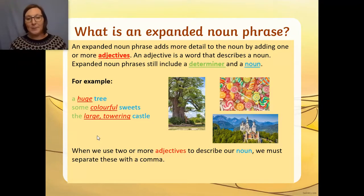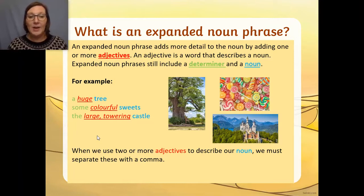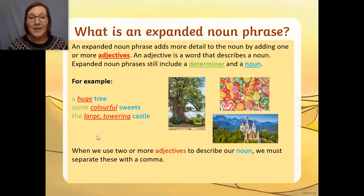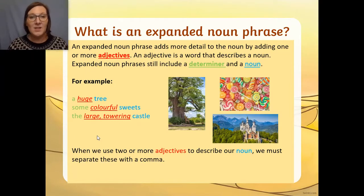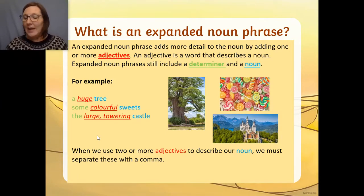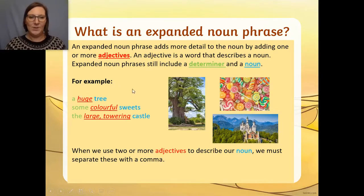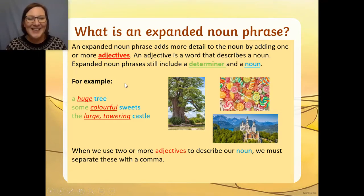So, for example, we have some pictures here. 'A huge tree.' 'A' is the determiner, 'huge' is our adjective, 'tree' is our noun. 'Some colourful sweets.' 'Some' — determiner; 'colourful' — adjective; 'sweets' — noun. I hope you're noticing that we've colour-coded them so when you see them you can spot them, because you're going to have to do a little job in a minute with those colours.